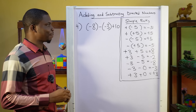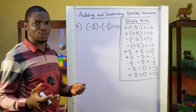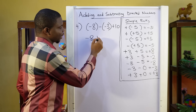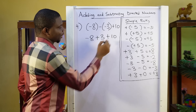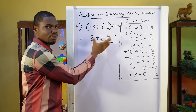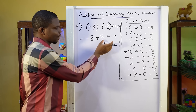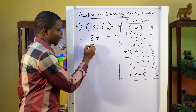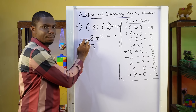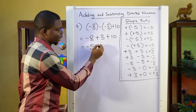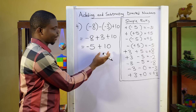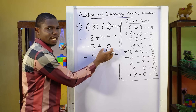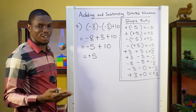Question 4: minus 8 minus minus 3 plus 10. The first thing we are going to do is open the brackets. We have minus 8. Minus changes the sign inside the bracket, so that will be plus 3, plus 10. We take them two at a time: minus 8 plus 3 — the signs are different, so we find the difference: 8 minus 3 is 5. We take the sign of the bigger number, so this is minus 5, then plus 10. The signs are different again: 10 minus 5 is 5. The sign is that of the bigger number, which is positive — so the answer is plus 5.